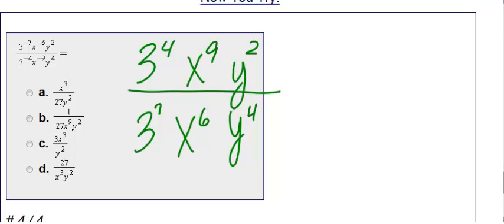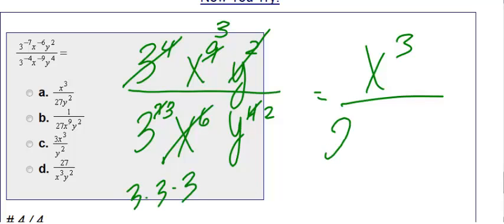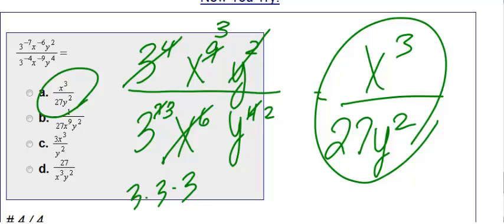Now I just need to simplify. I have three to the fourth on top and three to the seventh on the bottom — I can take away four, leaving three to the third on the bottom. Looking at my x's, I have six on the bottom and nine on the top, so I can get rid of six, leaving x to the third on top. For my y's, I have y squared on top and y to the fourth — I can get rid of two, leaving y squared on the bottom. So on the top I'm left with x to the third, and on the bottom three to the third, which is 27, times y squared. My answer is x to the third over 27y squared.